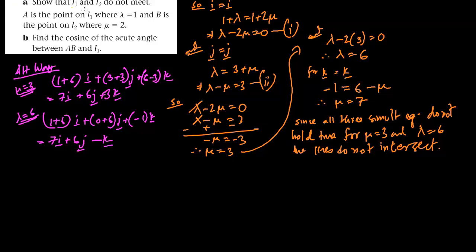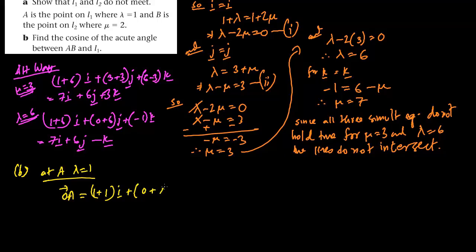Question B. Point A lies on L1 where λ = 1. Putting λ = 1 into L1: OA = (1+1)i + (0+1)j + (−1)k = 2i + j − k. So we have point A.